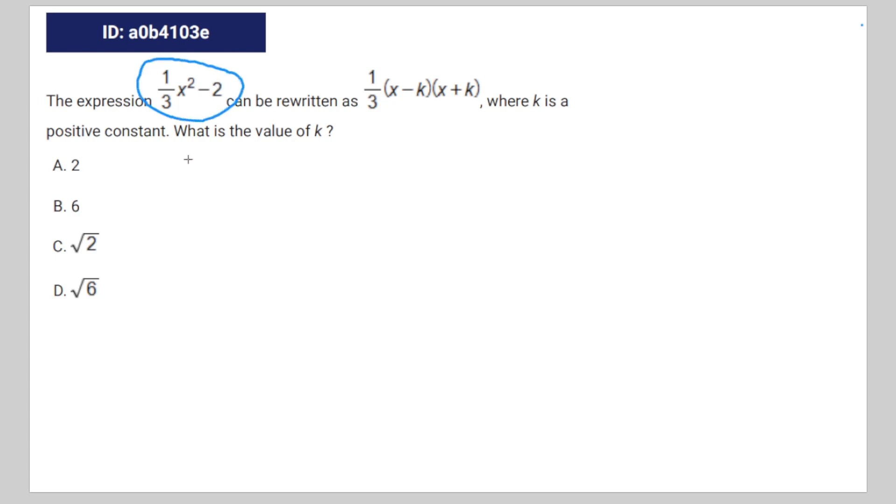You can take out the one third from this entire equation. By multiplying this part by six, that's going to be one third times x squared minus six is equal to one third times x minus k times x plus k.